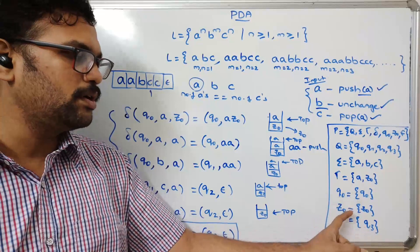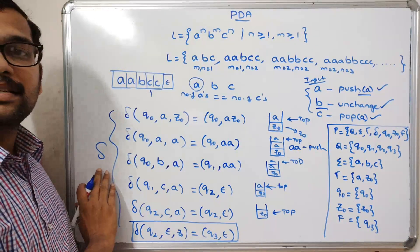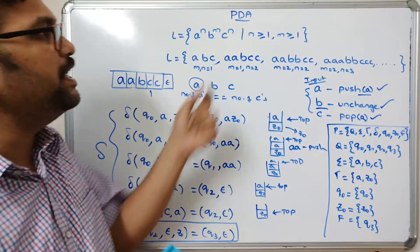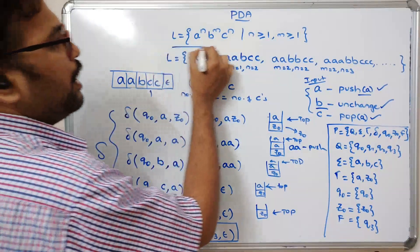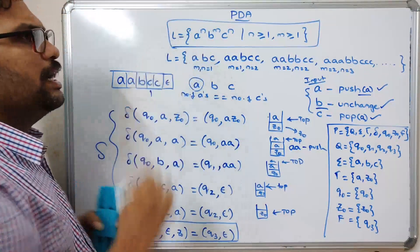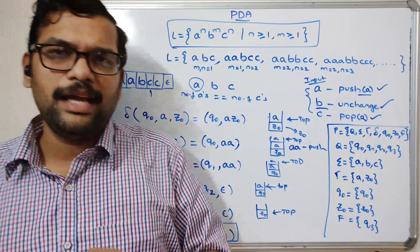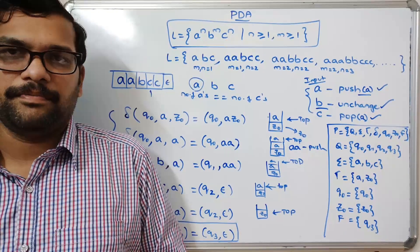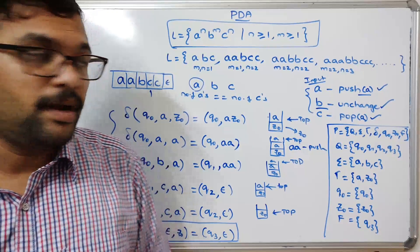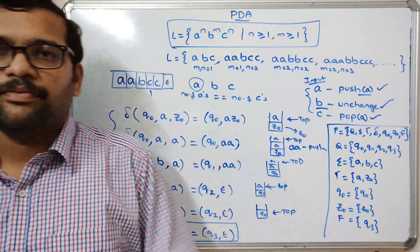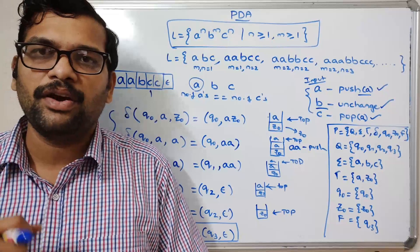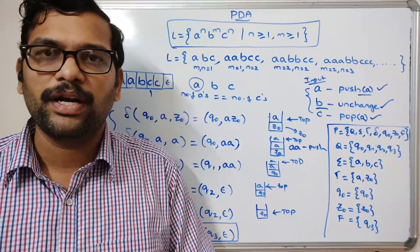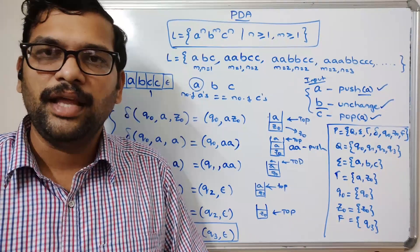This is how we construct the PDA for the given language. In all examples, we use the stack to push and pop the input string, and finally we need to balance the counts. I hope you understood this. If you have any doubts, feel free to post them in the comment section. If you enjoyed the session, please like, share, and subscribe to our channel. Thanks for watching!